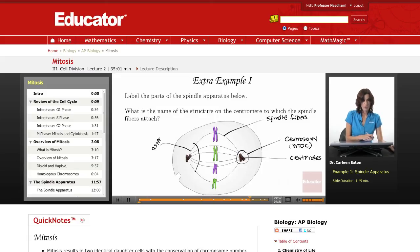This next part of the question asks me, what's the name of the structure to which the spindle fibers attach? So the centromere is here, in the middle, holding the sister chromatids together. And on the centromere are two kinetochores.